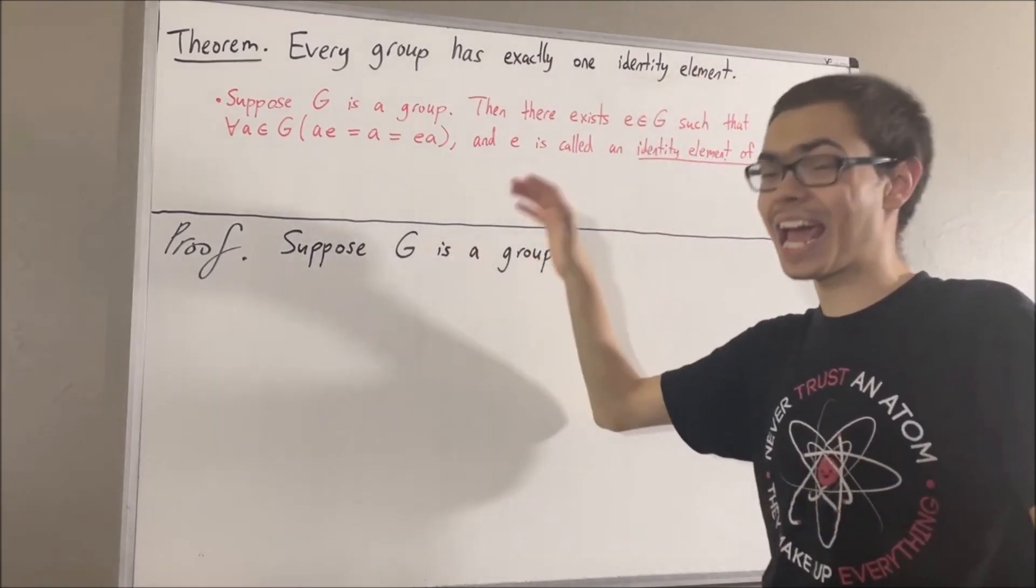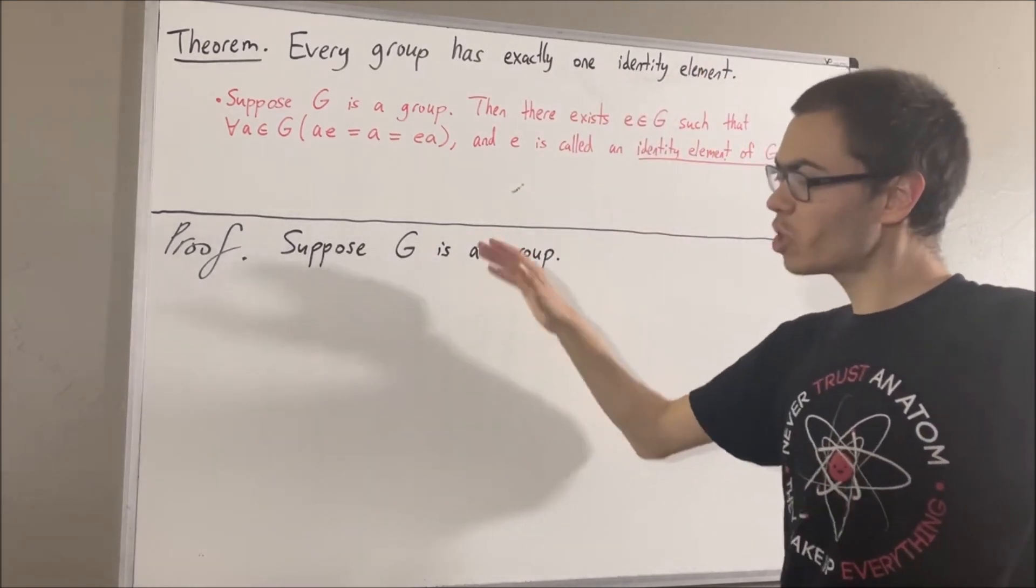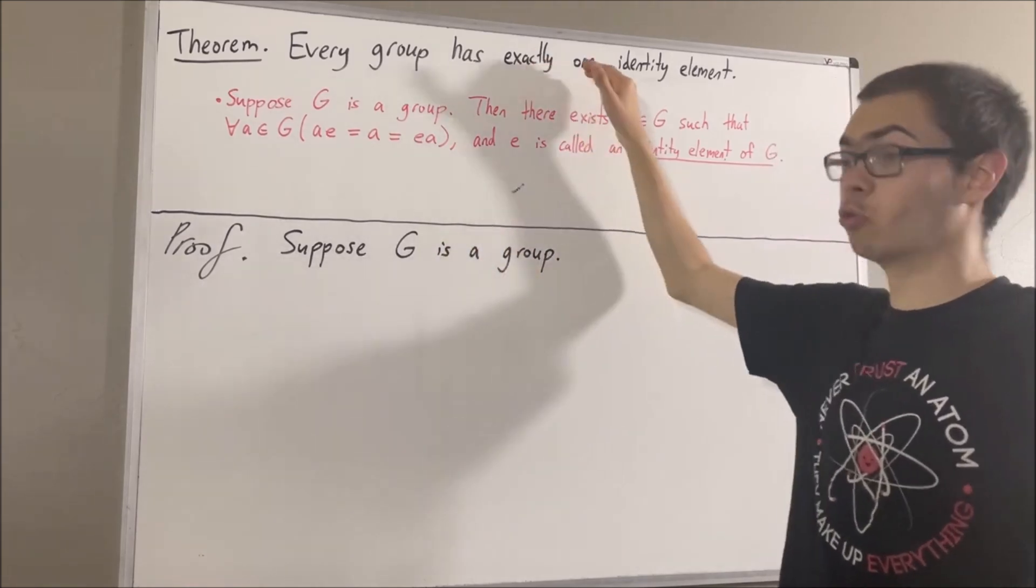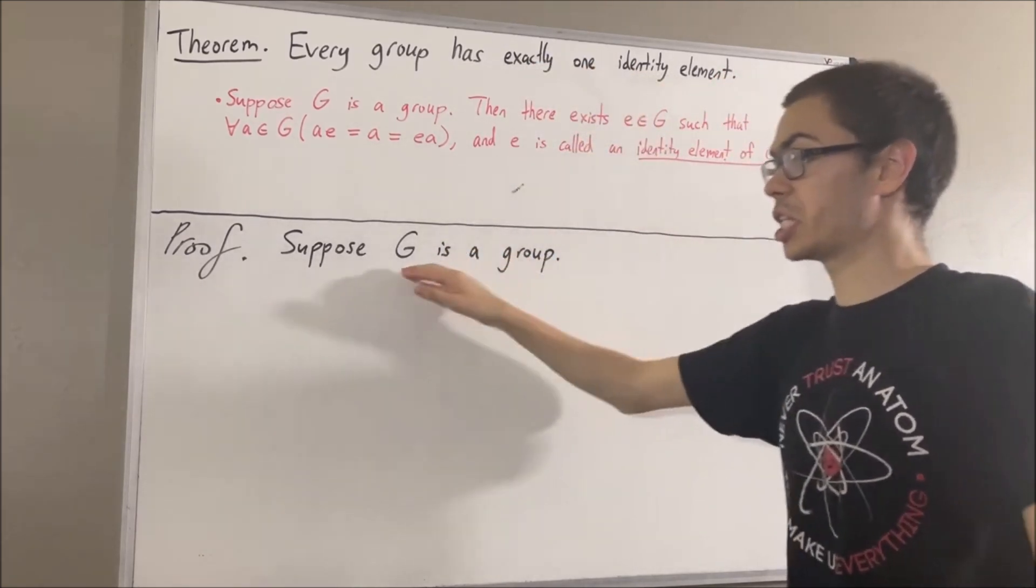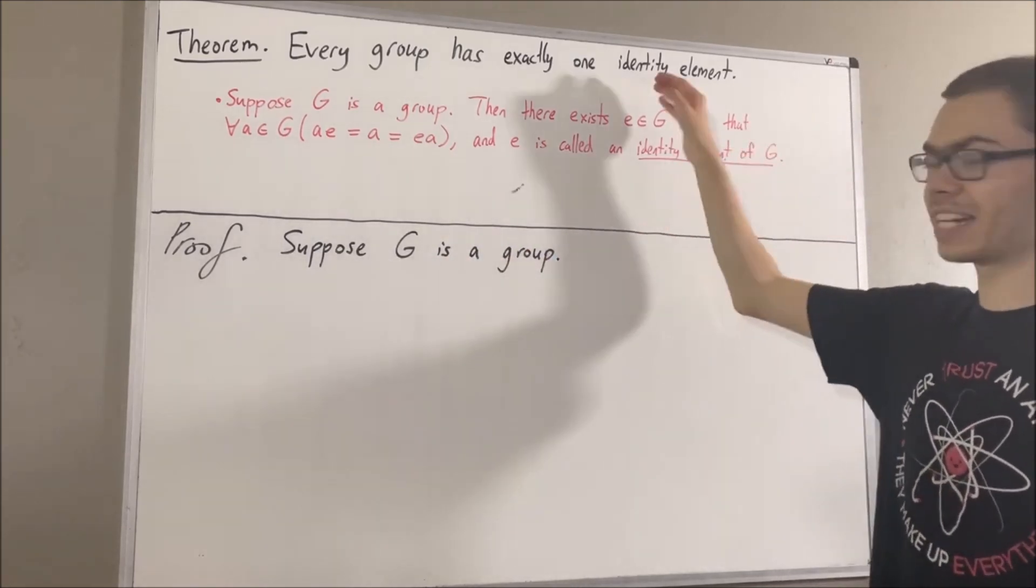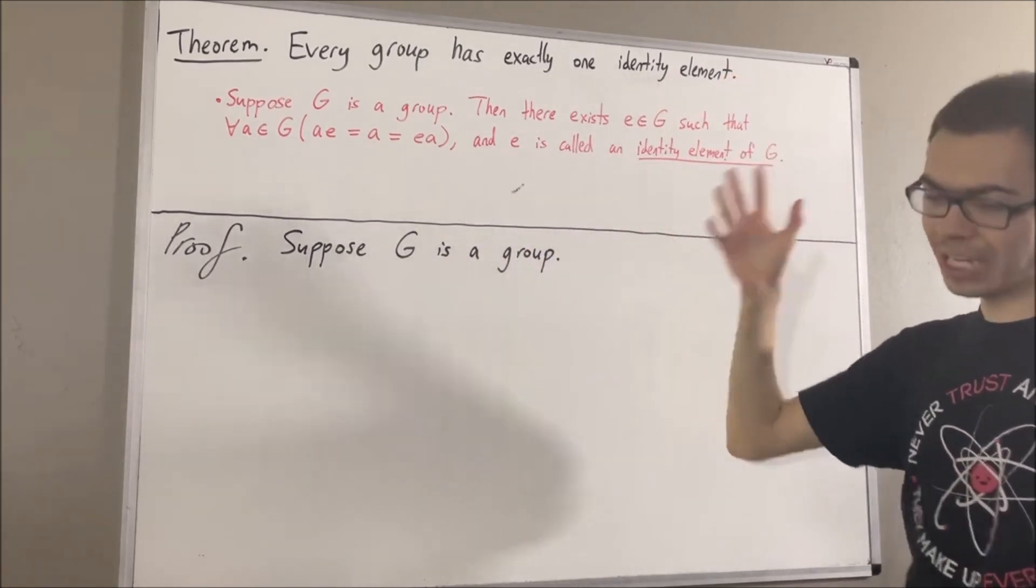Now, we know G has an identity element, but how do we show G has exactly one identity element? Well, let's suppose that G has two identity elements. I'll call them e1 and e2.